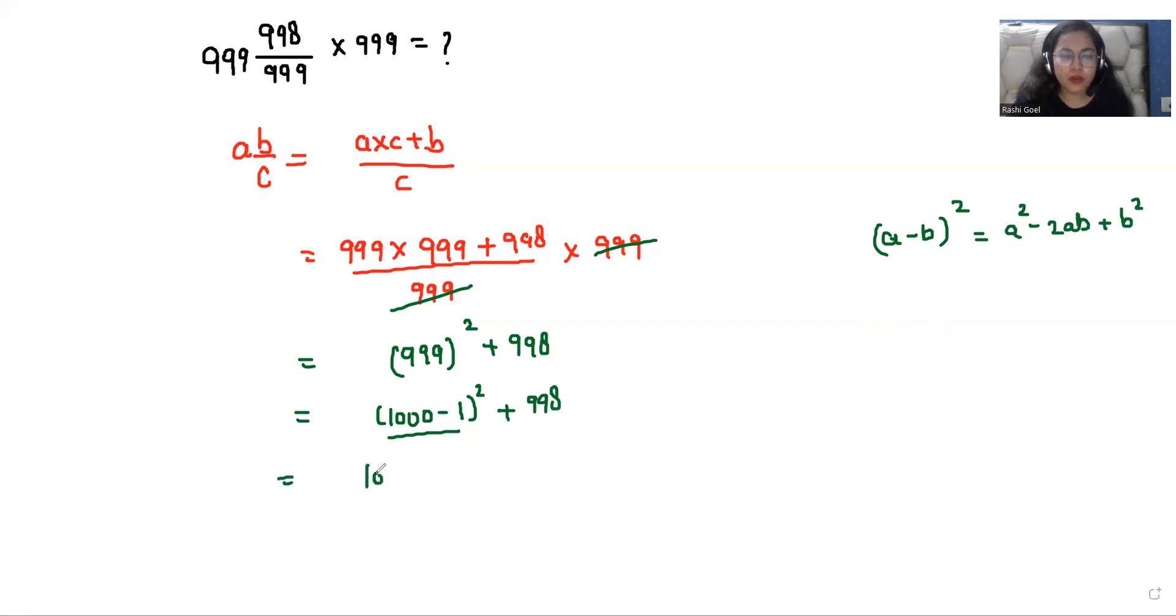So 1000 square minus 2 times 1000 times 1 plus 1 square, that is 1, plus 998. So 1000 square is 1,000,000 minus 2000 plus 1 plus 998.